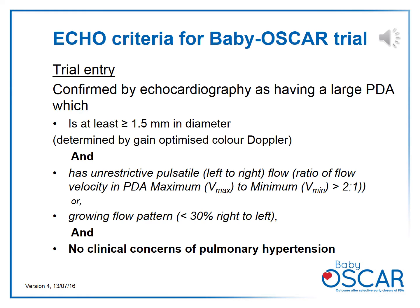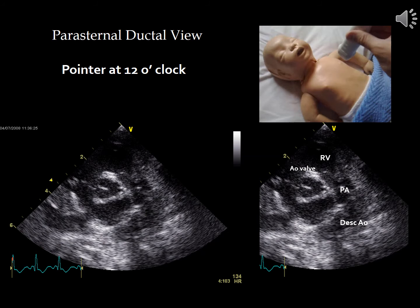The PDA ductal cut view requires an appropriate probe with the pointer facing towards 12 o'clock in the high left parasternal view, placed on the baby's chest to obtain the echocardiographic image. The image shows the right ventricular outflow tract, the pulmonary walls leading into the pulmonary artery which divides into the left and right pulmonary arteries, and a part of the descending aorta. In the center of the image is the cross-section of the aortic wall.